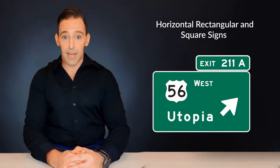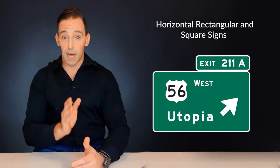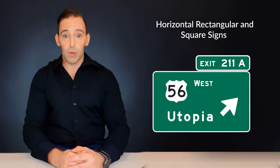And finally, the horizontal rectangle and square. A horizontal rectangle generally indicates guide signs. Along with the green and blue colors, they are very difficult to miss. That's all of the shapes you need to know.